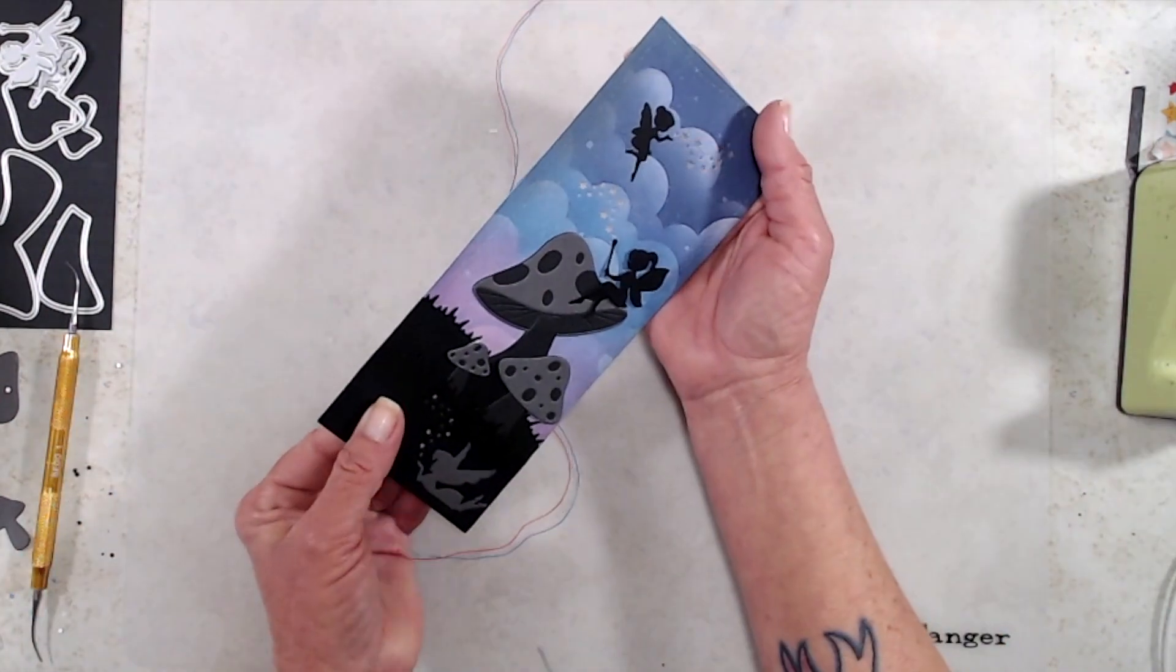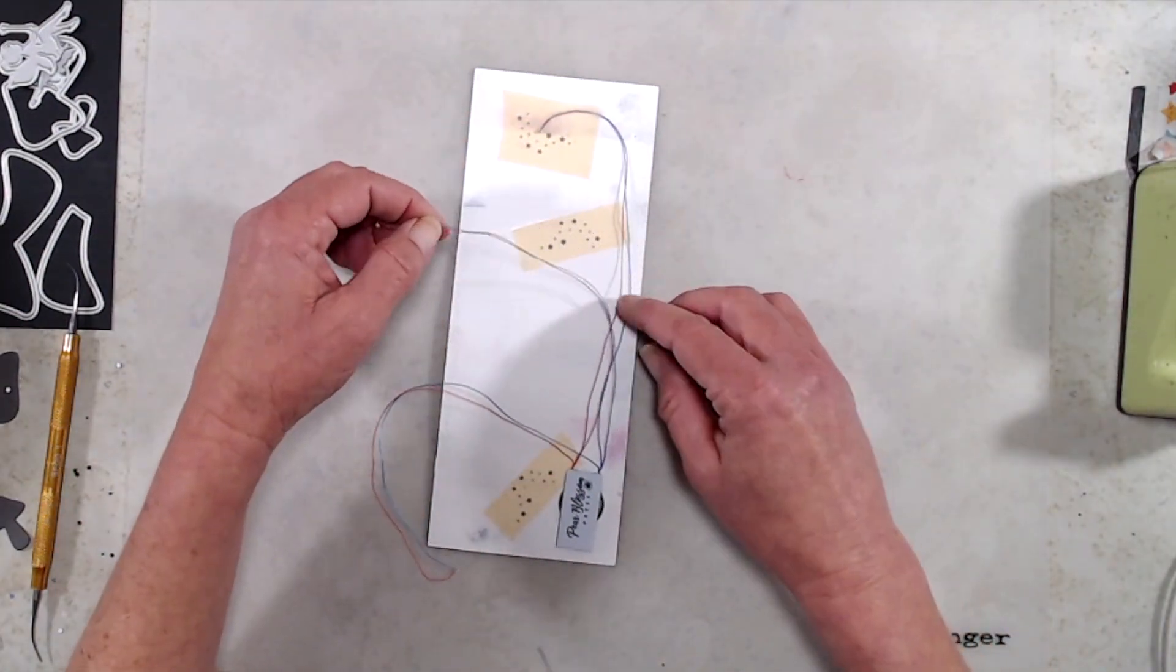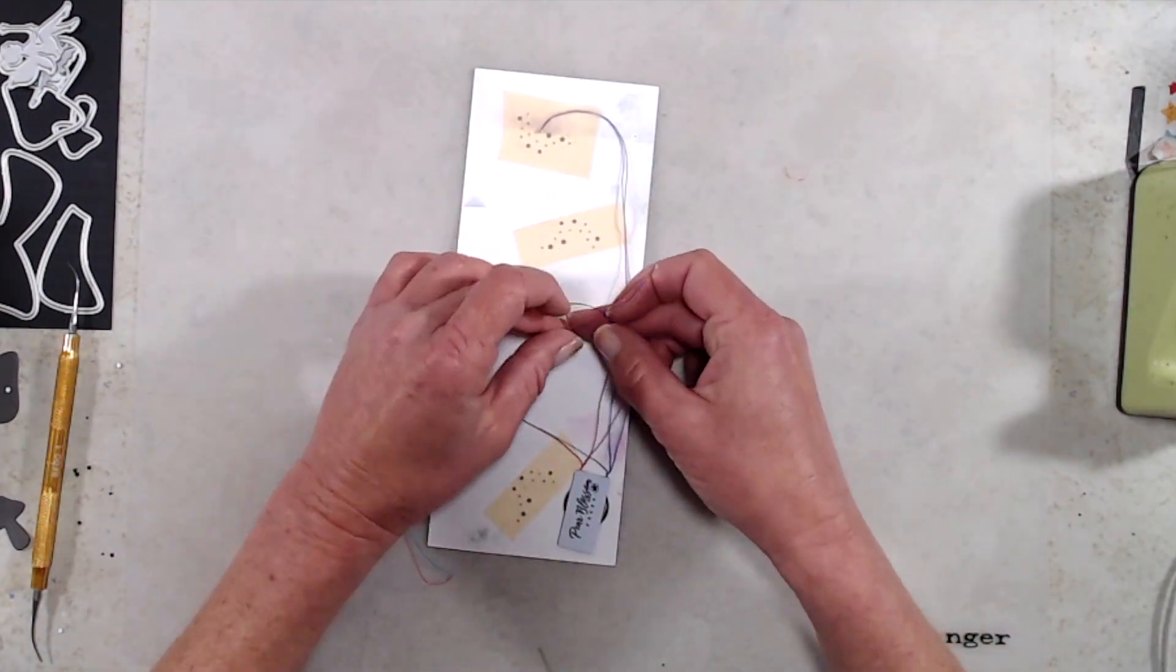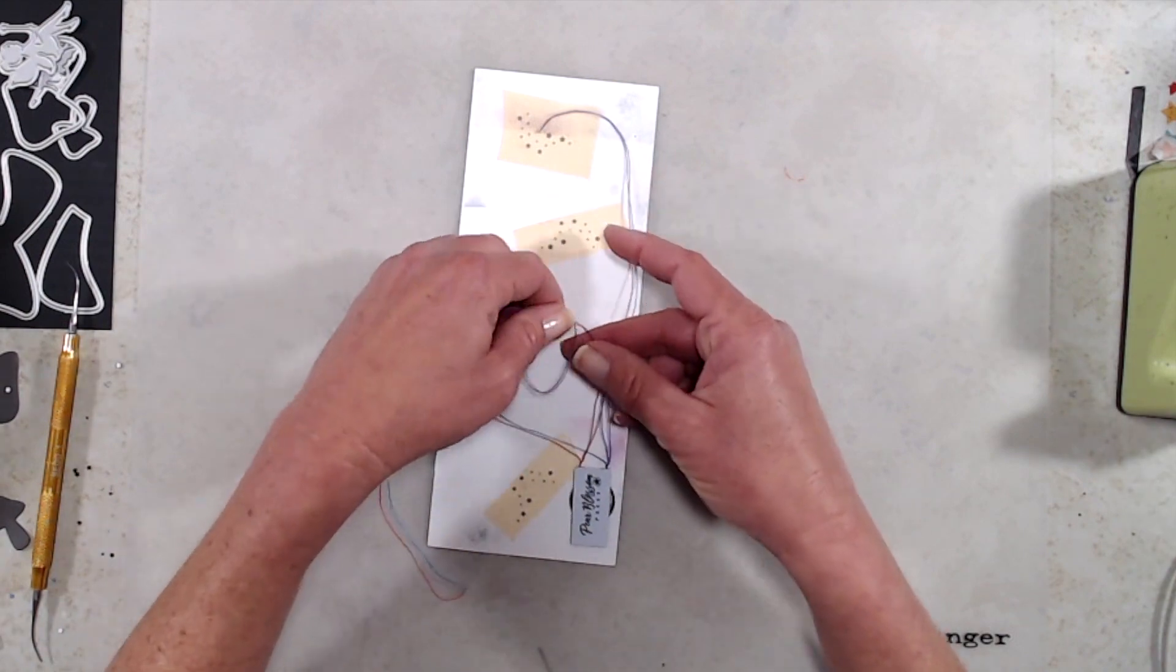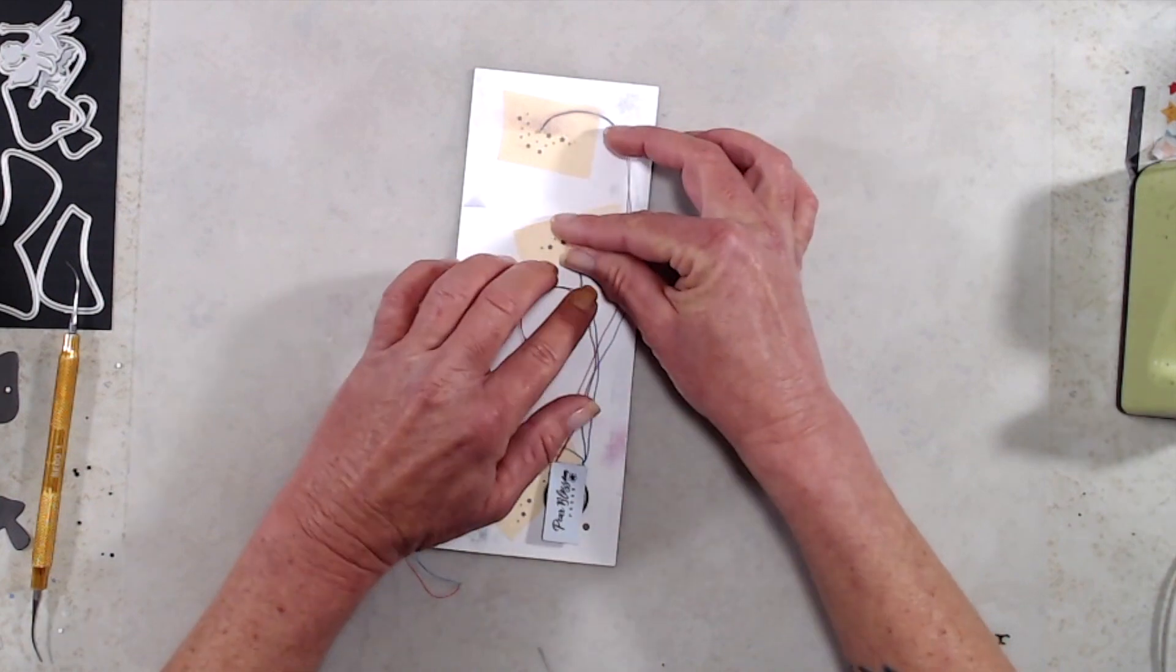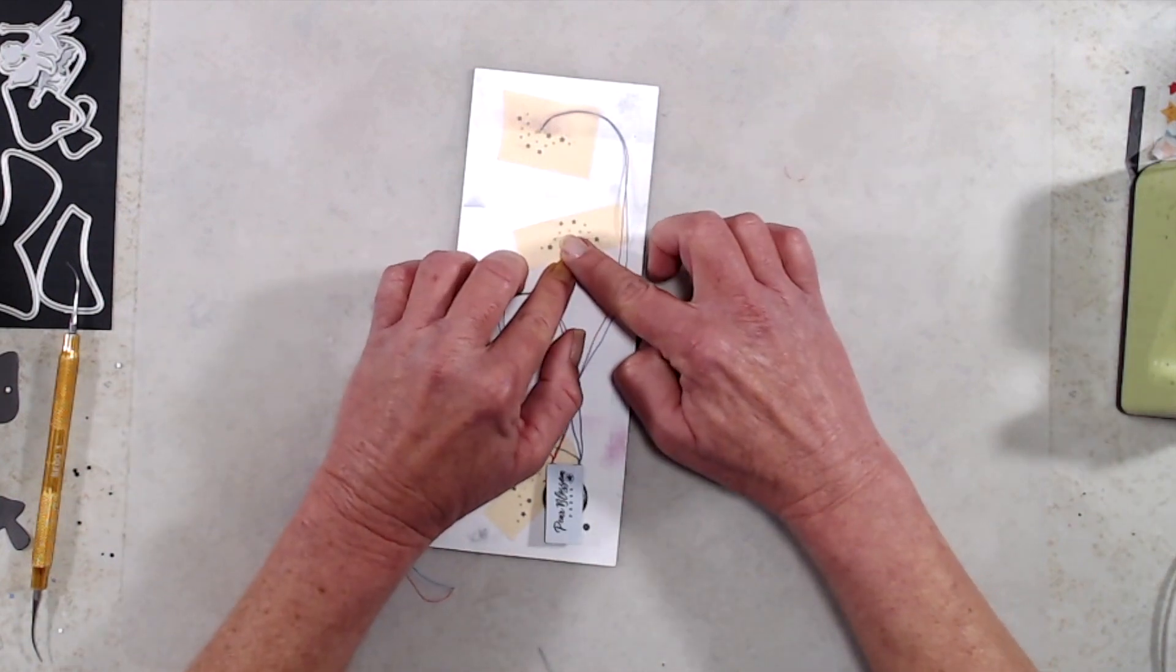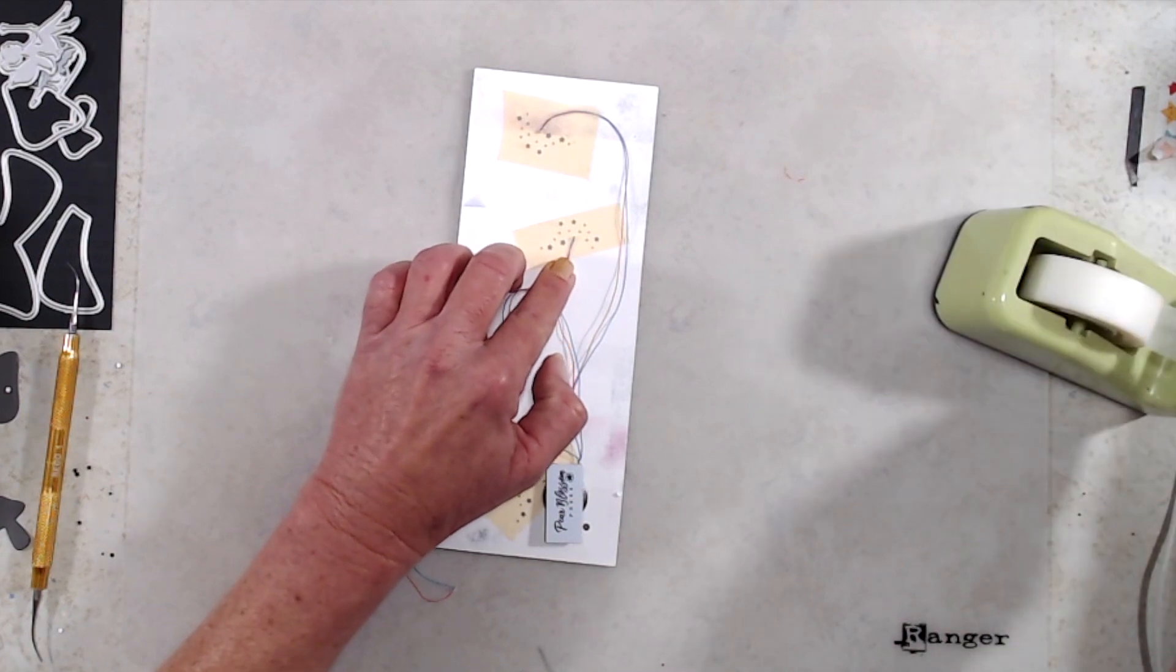The other thing to pay attention to when you're placing your lights is there's a yellow dot on the tip of each of the lights on each of the wires. That yellow dot needs to be facing down because that's the actual light that's going to show through the front of your card.